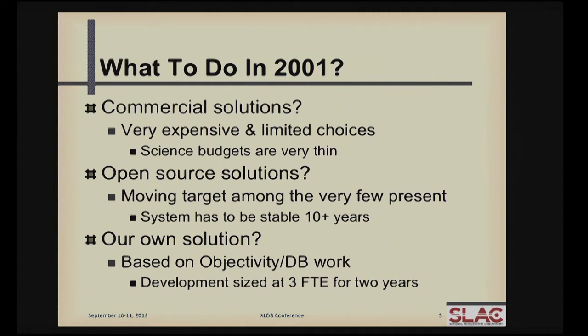How about open source solutions? There really weren't anything there, because people weren't really thinking of big data — except Google, who started roughly at that time thinking about how to put all this stuff together. There were a few things, but it was a moving target, and we needed something that would actually last more than 10 years. So we went with our own solution based on ObjectivityDB. We could reuse a lot of code we wrote to scale ObjectivityDB, and the development worked out to be about three FTEs for two years — a very small investment.